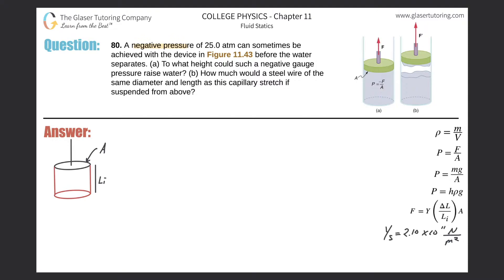Problem number 80: a negative pressure of 25 atmospheres can sometimes be achieved with the device in figure 11.43 before the water separates. Letter A: to what height should such a negative gauge pressure raise the water? So basically the fundamentals of this question — they're giving us a certain pressure and asking what height would this water be raised.